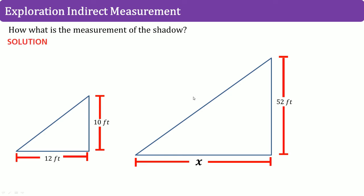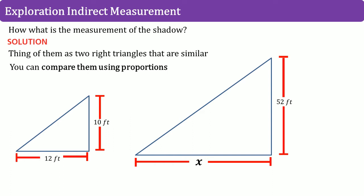So, let's look at the solution on how we approach this. Understand that these are two right triangles and they are similar because they are the same shape, but not the same size. You can compare them using proportions. So, let's set up the ratio.